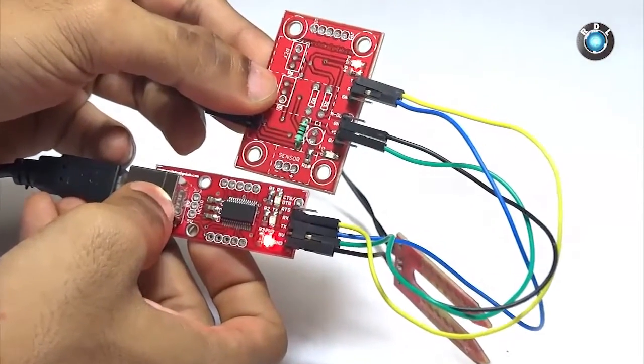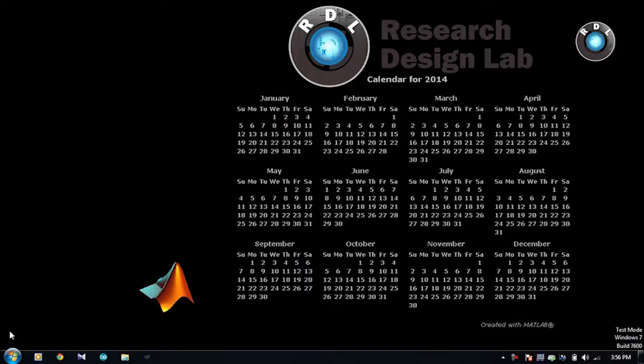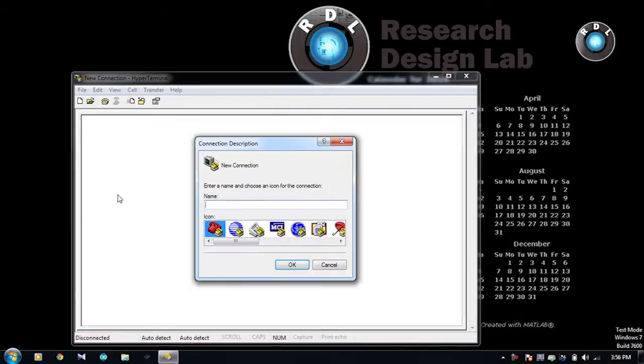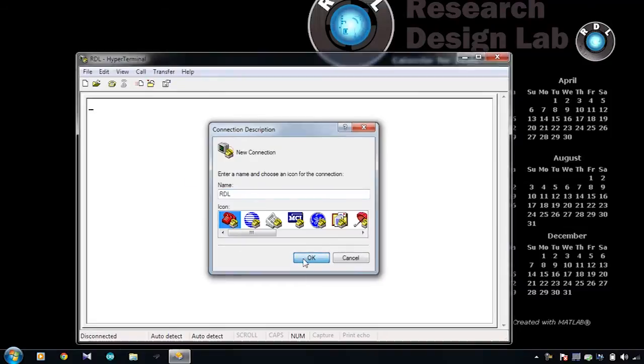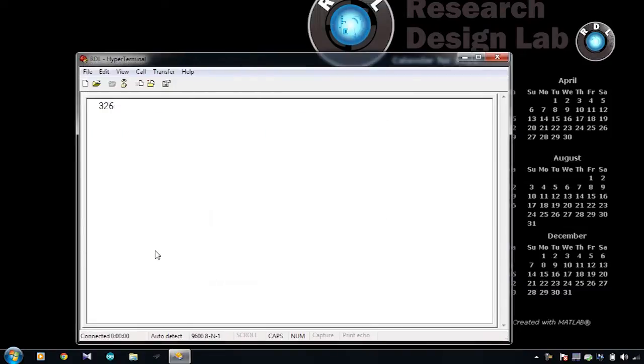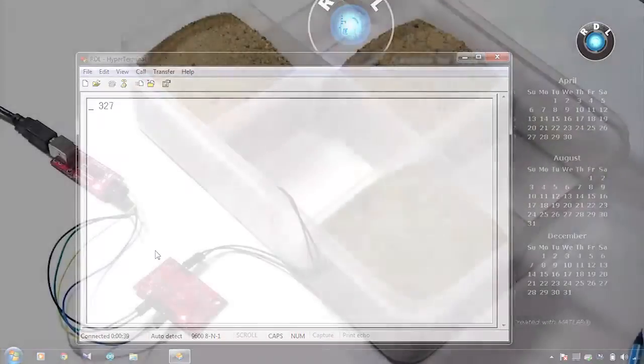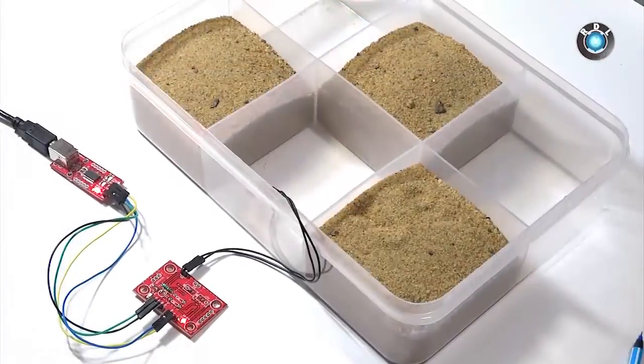Now let us view this TTL data. Here I have used hyperterminal software for Windows. Set the software to the default settings. You can already see some data here. This number here will be your reference soil moisture level when there is absolutely no moisture content in your soil. Technically it means that the conduction across the electrodes is null at this reading. Next let us see how the value varies when the moisture content in the soil changes.